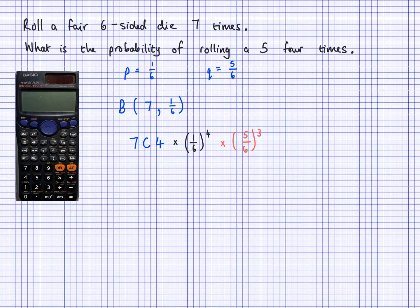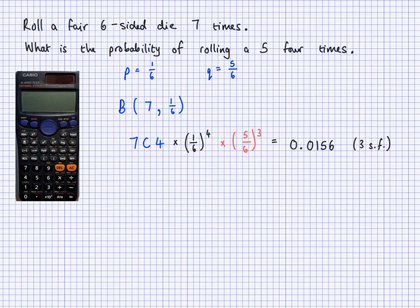I've put this into my calculator and got a very long decimal. Rounded to three significant figures, that's 0.0156. The full decimal is 0.015628572245. So the probability of rolling a five exactly four times when rolling a fair six-sided die seven times is 0.0156 to three significant figures.